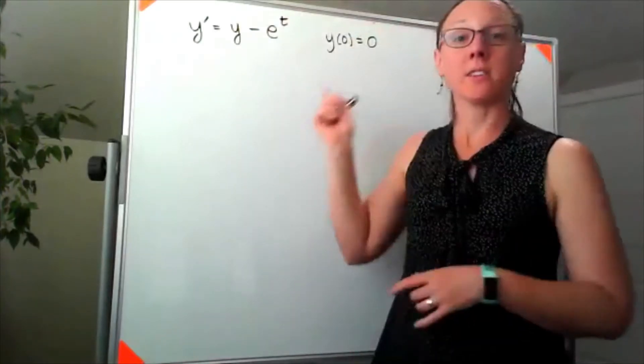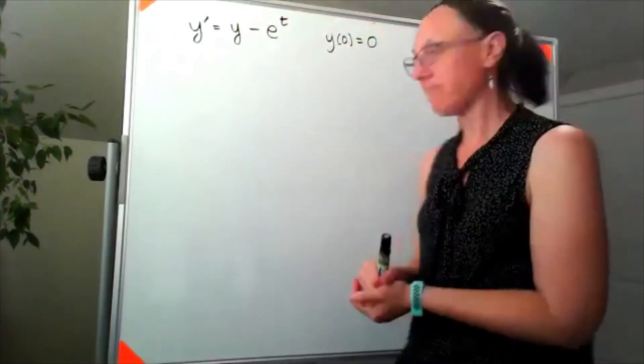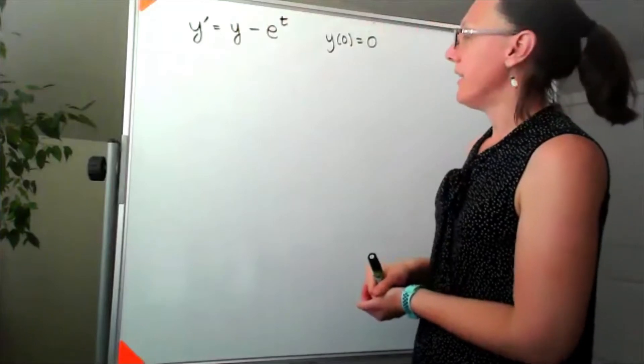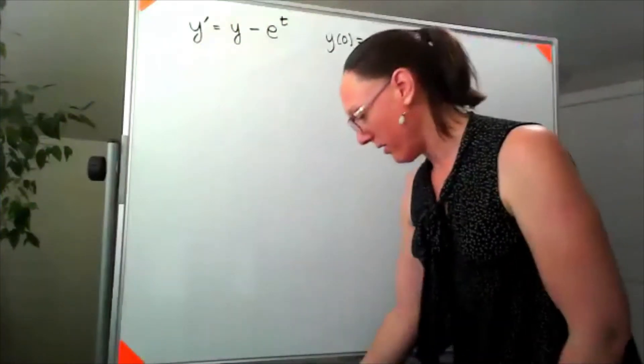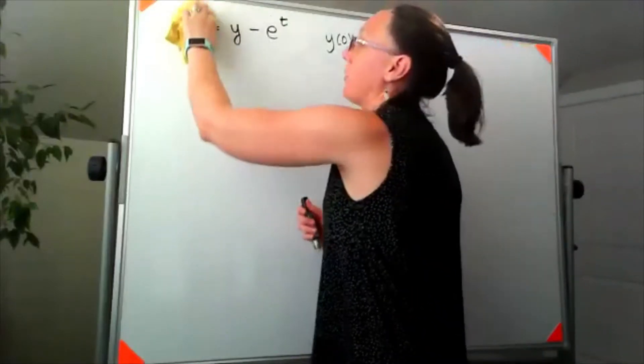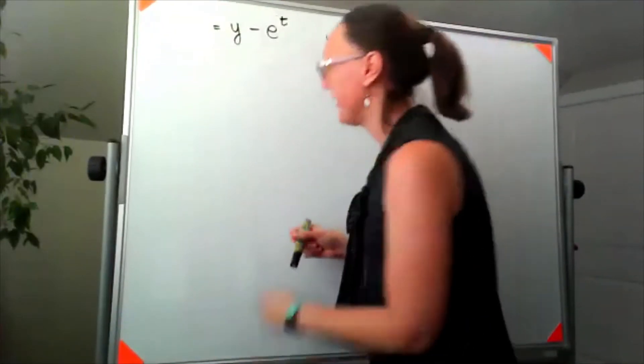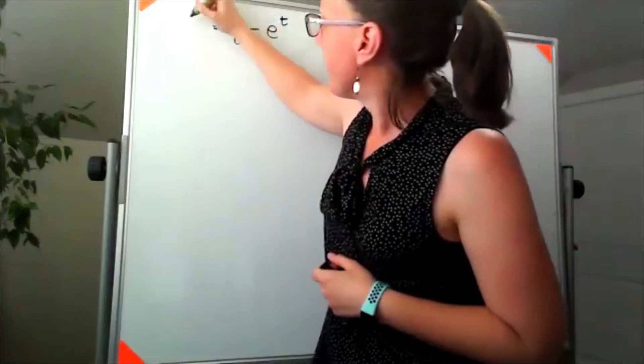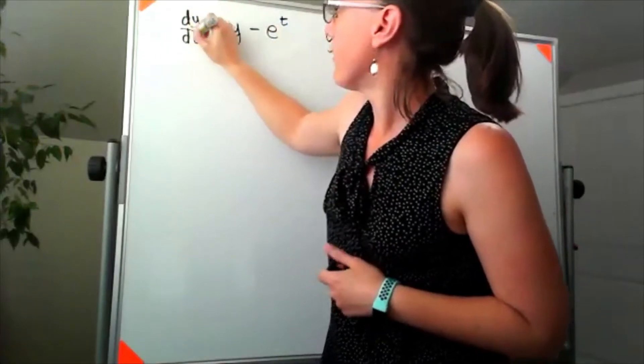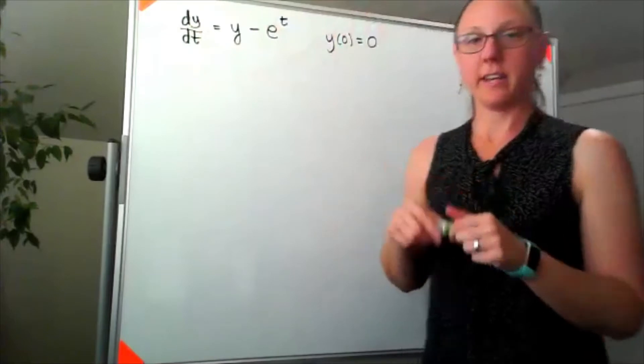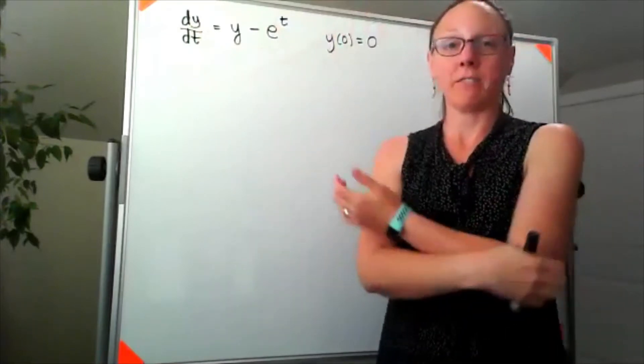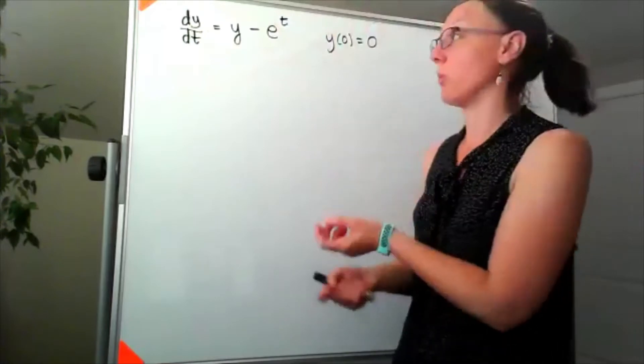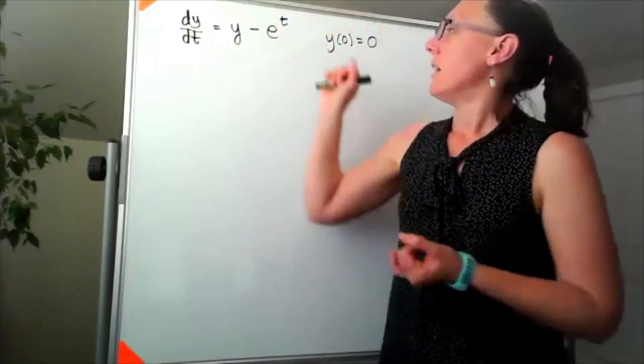Okay, so I want to solve this differential equation. The first thing that I'm going to look at is that y prime, and I'm going to rewrite that to say dy/dt. Now I'm going to look on the right hand side so that we can try to classify what sort of differential equation this is.